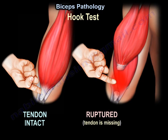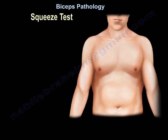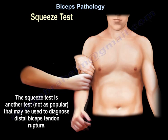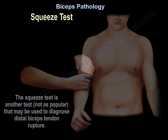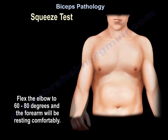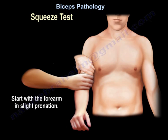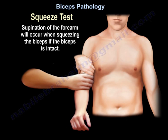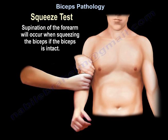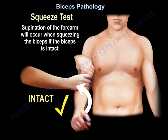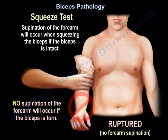Here you can see the tendon is intact, and here the tendon is missing because it ruptured and migrated proximally. The squeeze test is another test that may be used to diagnose distal biceps tendon rupture. The elbow is flexed 60 to 80 degrees with the forearm resting comfortably in slight pronation. Supination of the forearm will occur when squeezing the biceps if the biceps is intact. If the biceps is ruptured, there will be no forearm supination.